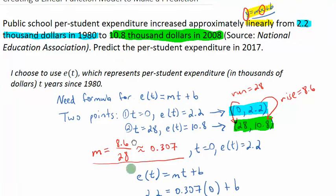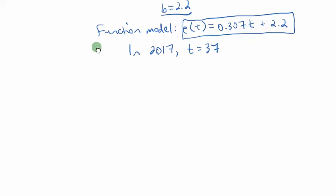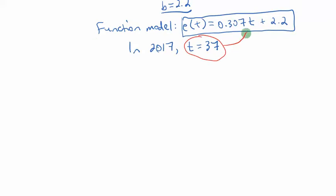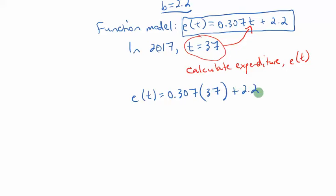So t is measured from 1980 and 2017 is 37 years since 1980. So I take this value, I plug it into my model for t, and I calculate the expenditure, which is what the question was, and that's represented by e of t. So I end up with e of t equals .307 times 37 plus 2.2. So e of t equals, if you multiply and then add, looks like you get approximately 13.559.